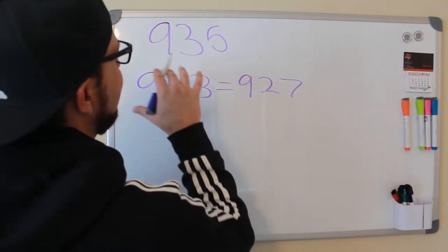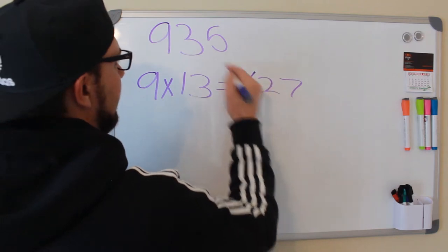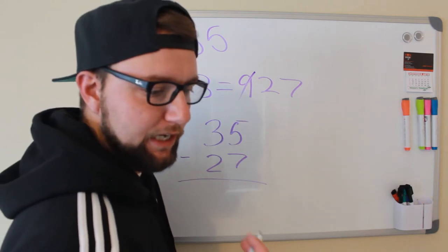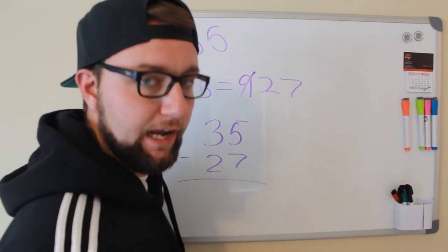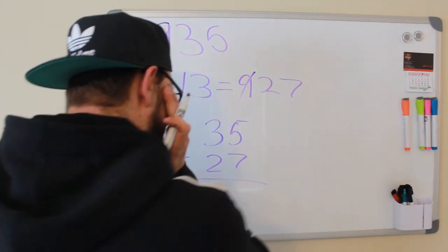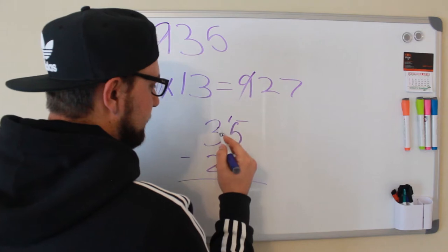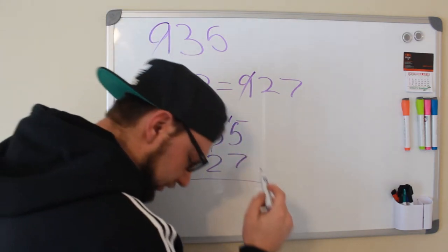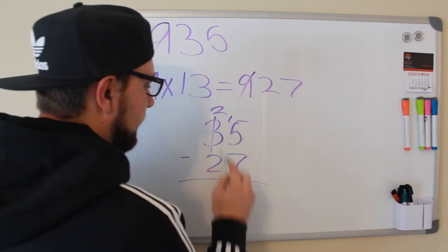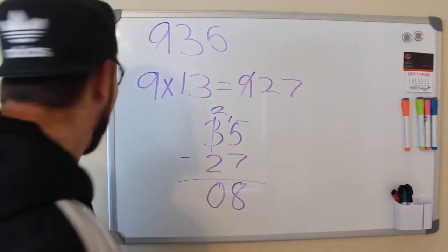So we're going to take 935 minus 927. Let's cross out the 9s. I also don't know how to do subtraction like this anymore — calculators have gotten way too easy to use. So 35 minus 27: we're going to have to carry a 1, so this becomes 15, this becomes 2. So now it's 15 minus 7, which is 8. And 2 minus 2 is 0. So the remainder is 8.